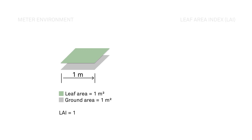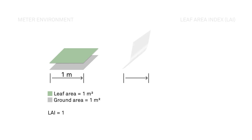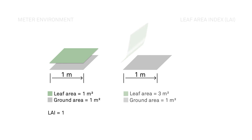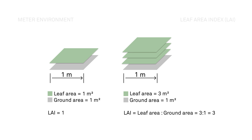Imagine that same square meter, only now it has a thicker canopy over it, resulting in three layers of leaf material covering the same square meter of ground surface. The LAI for this plot would now be three square meters of leaves for one square meter of ground, resulting in a leaf area index of three.